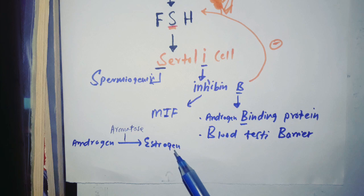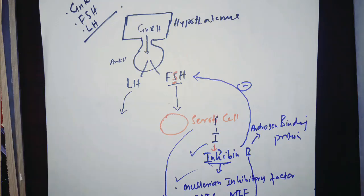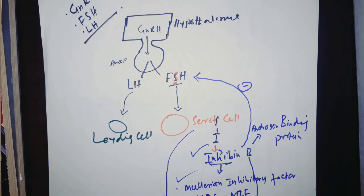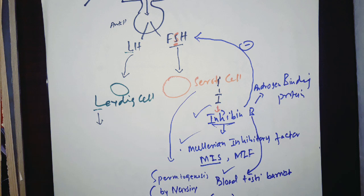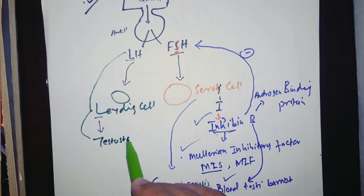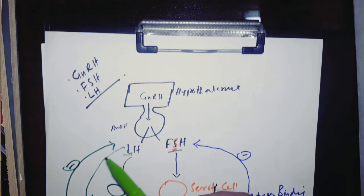LH is going to act on Leydig cells, both having the same word L. If we invert this L it becomes T, which means that Leydig cells secrete testosterone. This T is tall so it will also inhibit the LH hormone and the GnRH hormone. Inhibin B can only inhibit FSH.